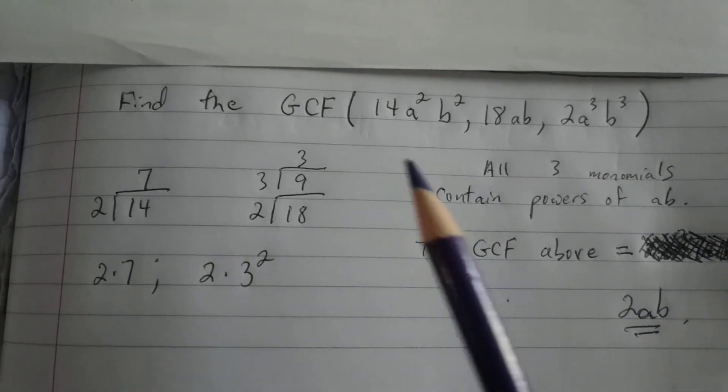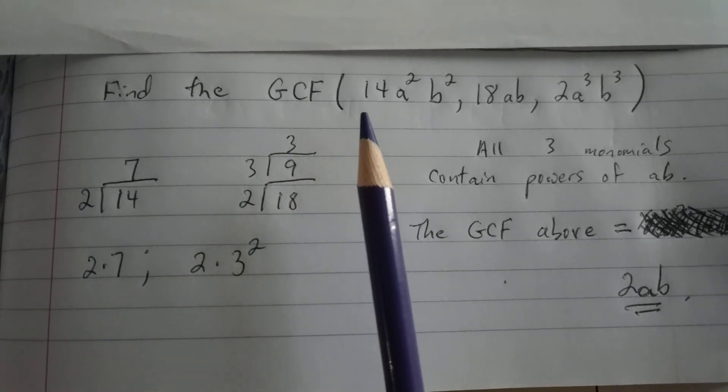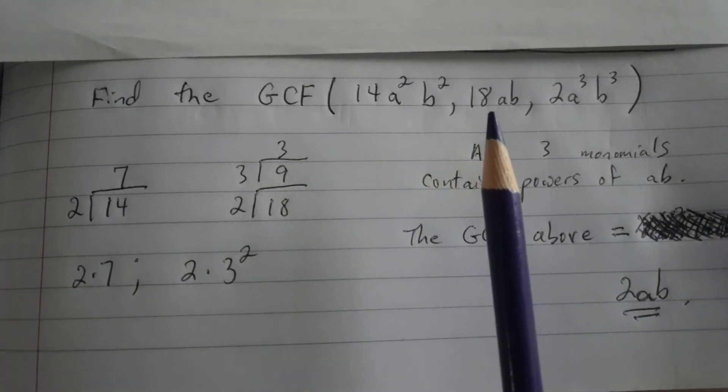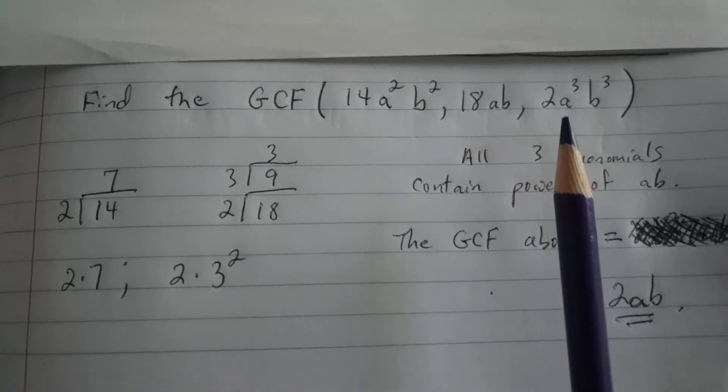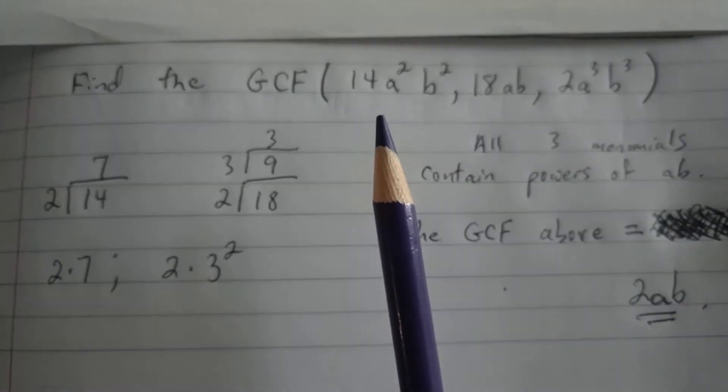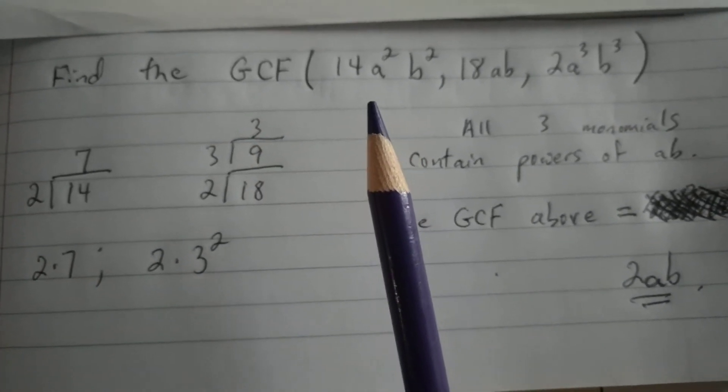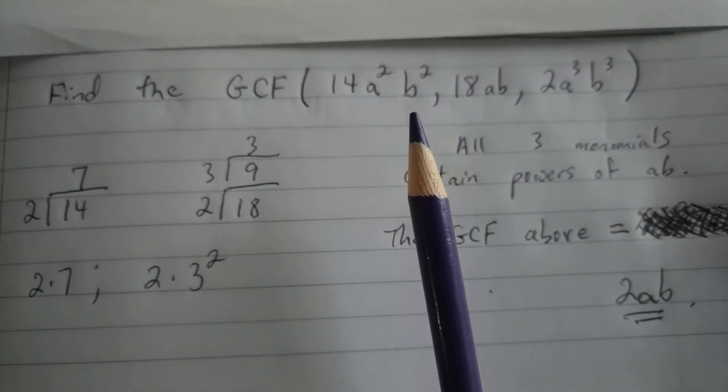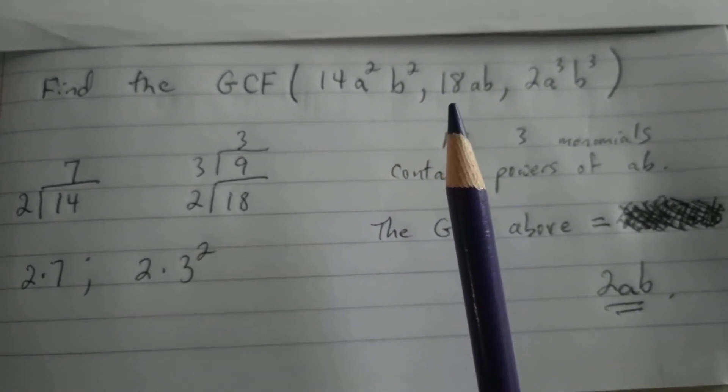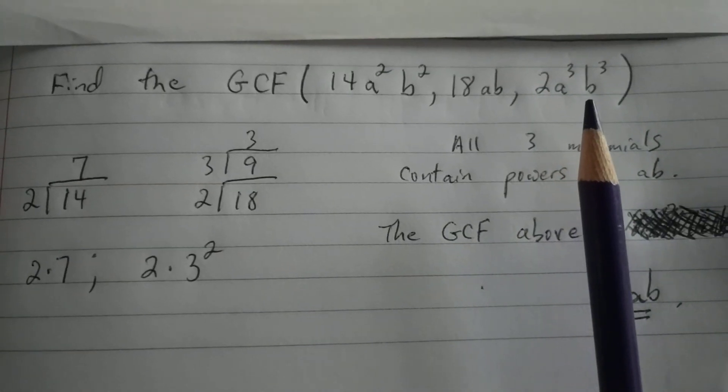Now we're going to combine our prime factorization technique of integers along with looking at variable factors that are also factors of monomials. So the second part to this lesson is to find the greatest common factor of monomials. We're going to find the greatest common factor of 14a²b², and 18ab, and 2a³b³.